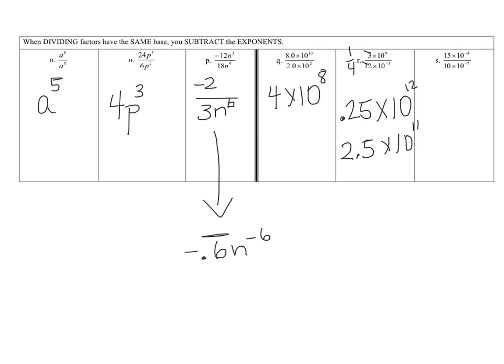Looking at letter S: 15 divided by 10 is 1.5 — dividing by 10 just slides the decimal point to the left. Or you can reduce 15 over 10 by 5 to get 3 over 2, which is 1.5. Now subtract the exponents — top minus bottom: negative 4 minus negative 7. Subtracting a negative is the same as adding a positive, so that's negative 4 plus 7, which is 3. The answer is 1.5 times 10 to the 3rd, which is in scientific notation. There's a link for the practice problems — find the scientific notation operations practice video for explanations.